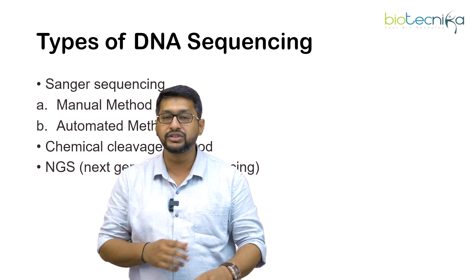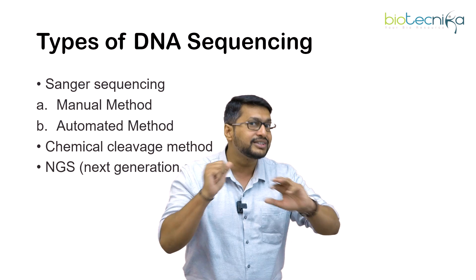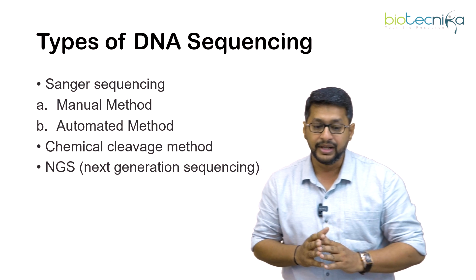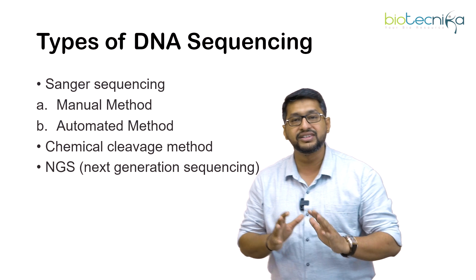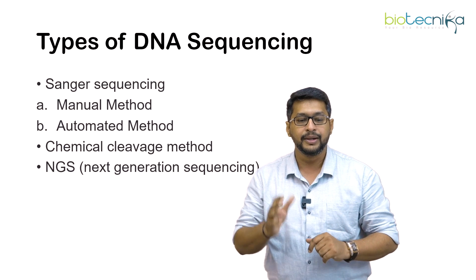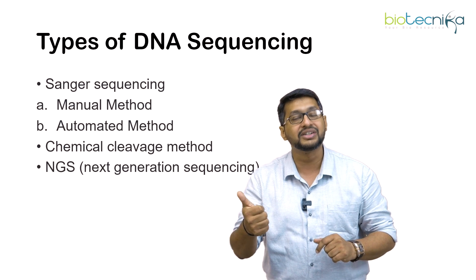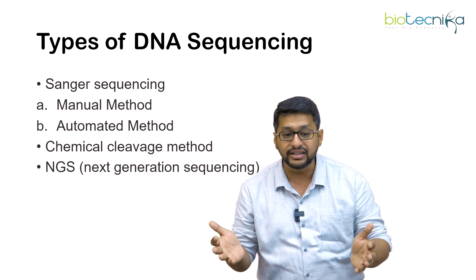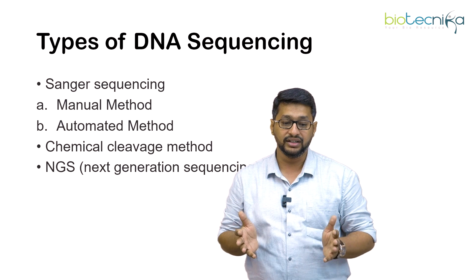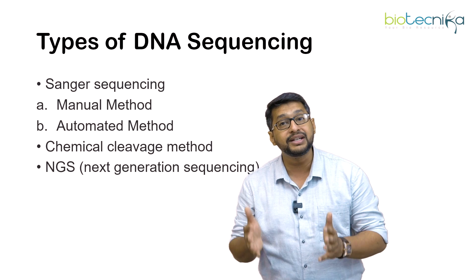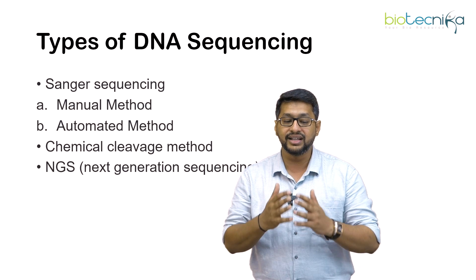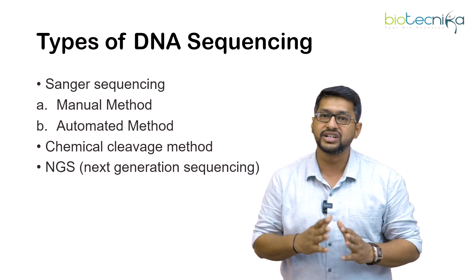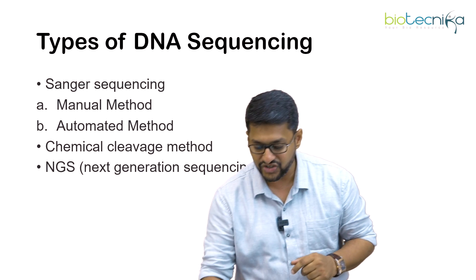Once we have understood the composition of DNA, let us also try to see what are the various types of DNA sequencing. There are three major types: the first is Sanger's classical method of DNA sequencing, which involves a manual method and then an automated method. Then, apart from that, you have the chemical cleavage method, and the advanced method is next generation sequencing, which is called NGS.